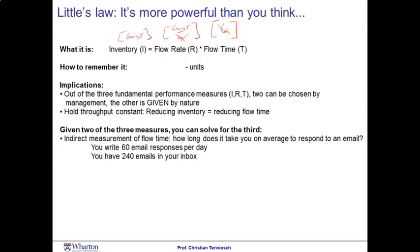The second thing we do with Little's Law is that oftentimes we find we might know two of the performance measures in a process, but it's hard to observe the third one. Little's Law can help us compute the third one from the other two. Typically in a process, flow rate and inventory are relatively easy to observe. Flow time, in contrast, is not. Let me give you an example.